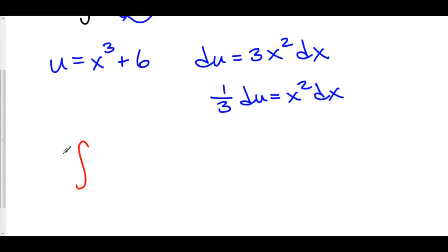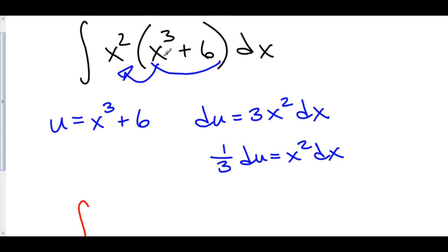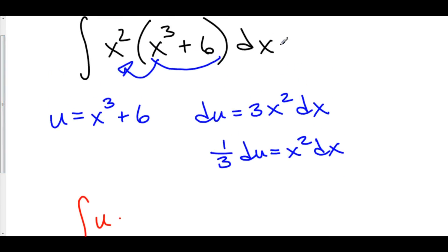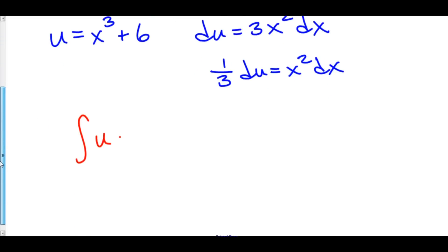So, we have the integral. x cubed plus 6 turns into u times the x squared dx turns into 1 third du. So, we've got 1 over 3 du.